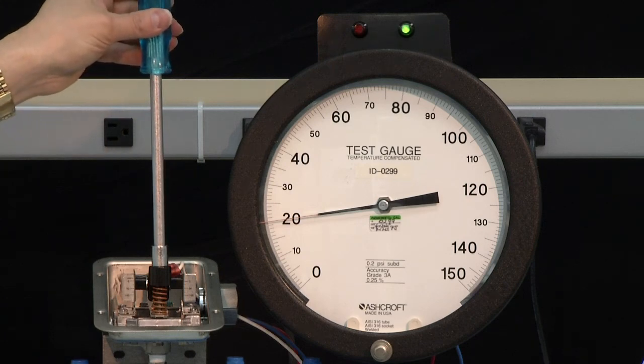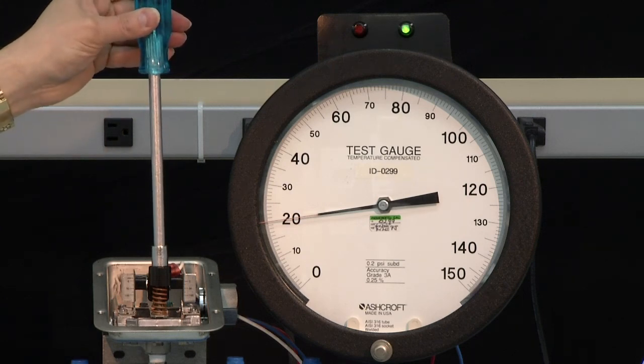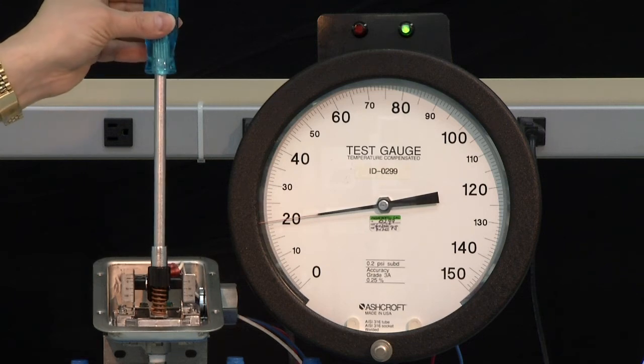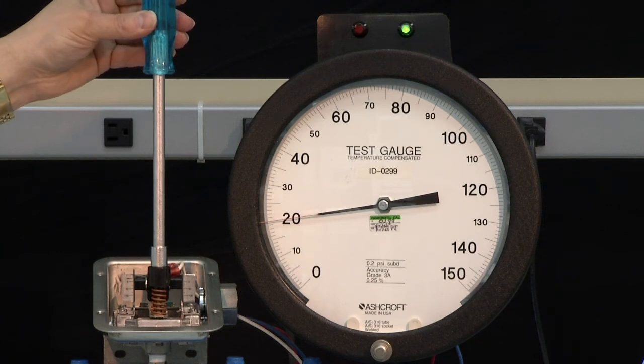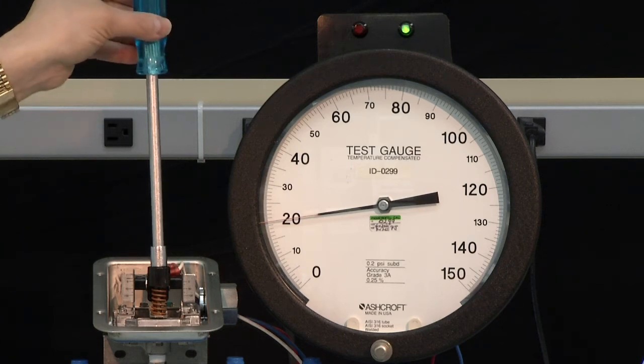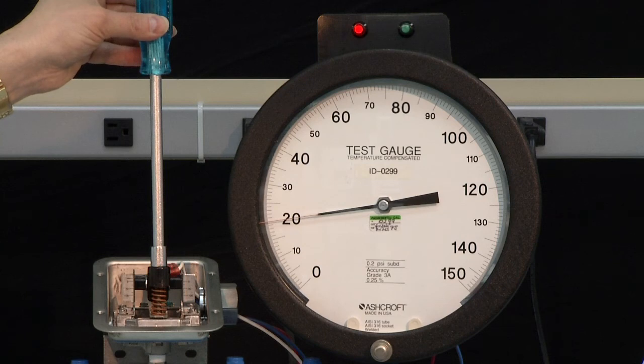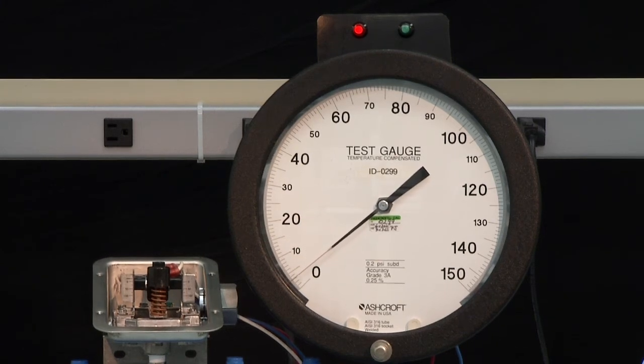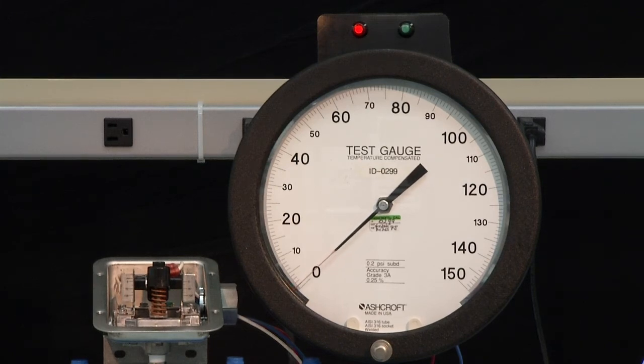Now we're going to turn it clockwise until it just turns off. Now we will measure the set point to see if we have set it correctly. So to do that we will drop it to zero and then take it to 100 pounds. And then we will go down and measure the set point.